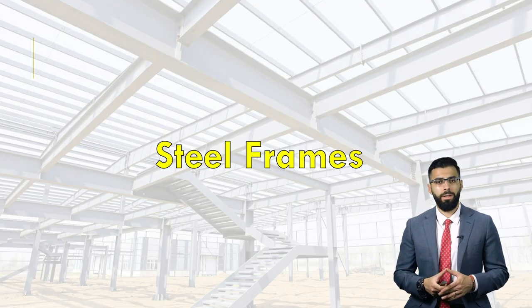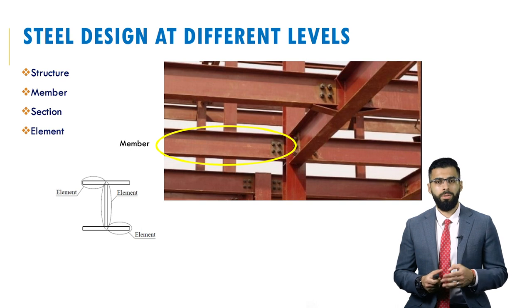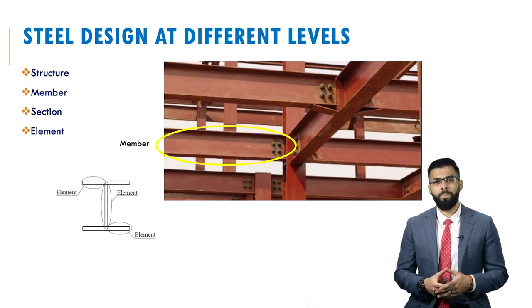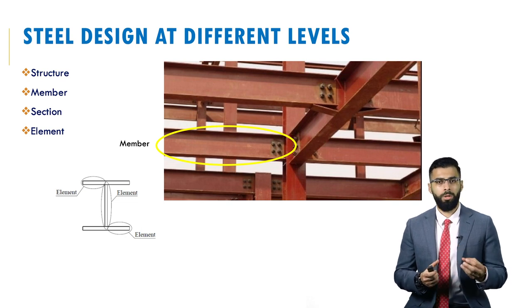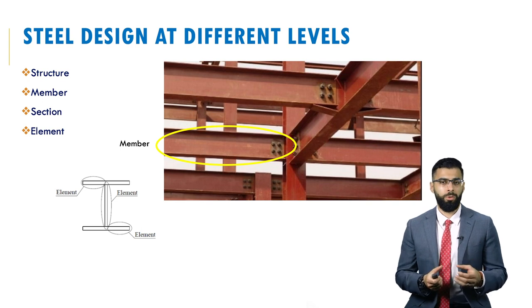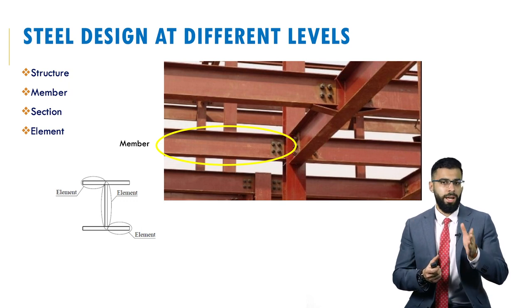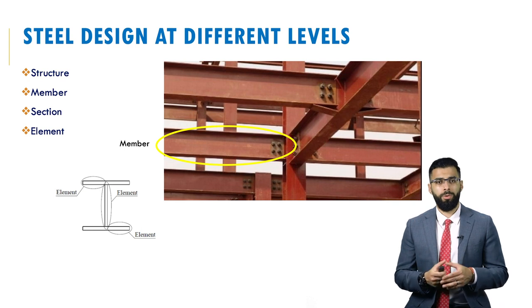Let's start by defining what a steel frame is composed of. It's important to differentiate between some key terms: the structure, the member, the section, and the element. The overall building is your structure. One beam, for example, is your member — one component of the structure. If you cut that member and look at its cross-section, you see an I-beam, which is composed of various elements that combine together to give the overall member.